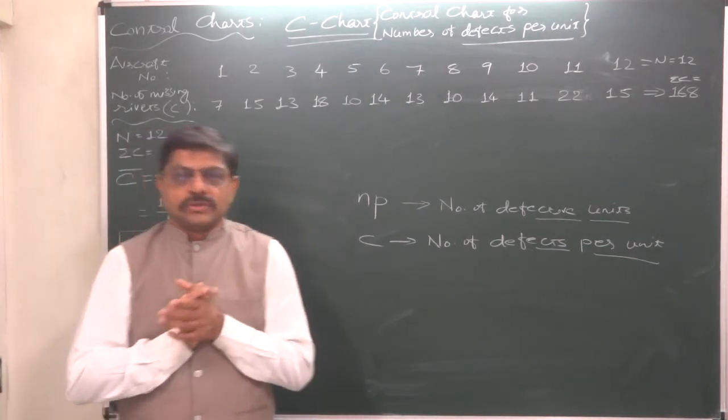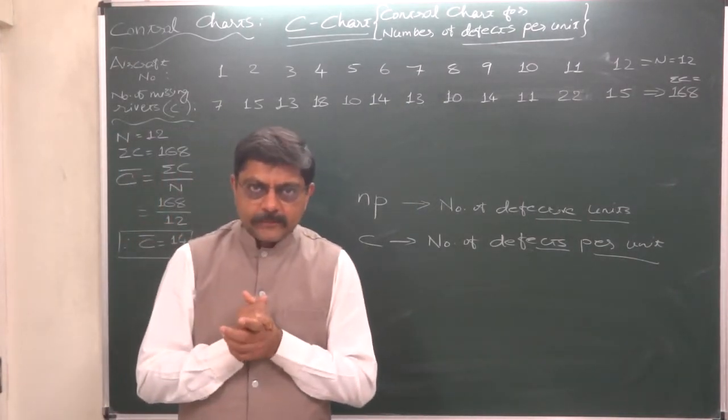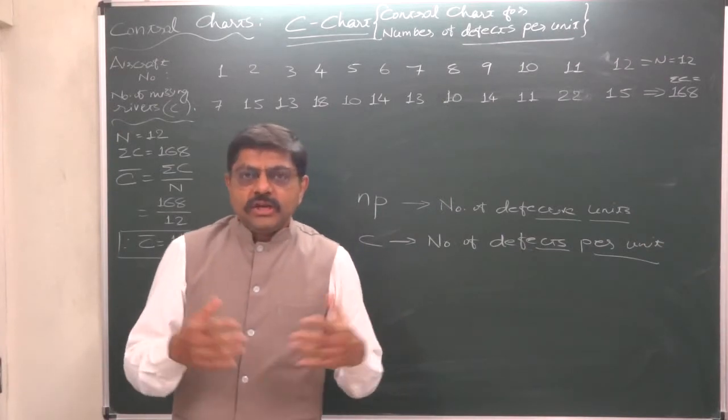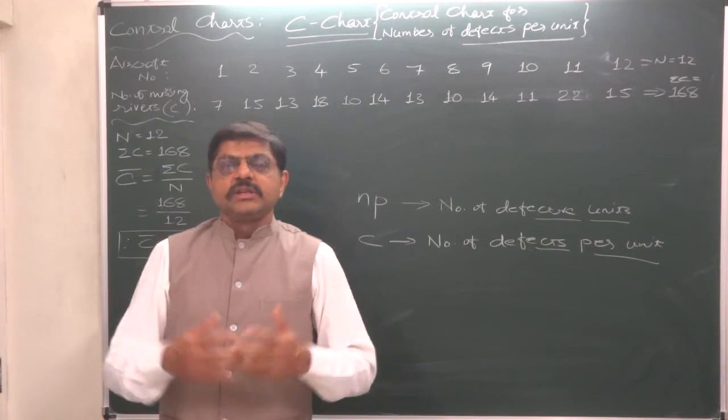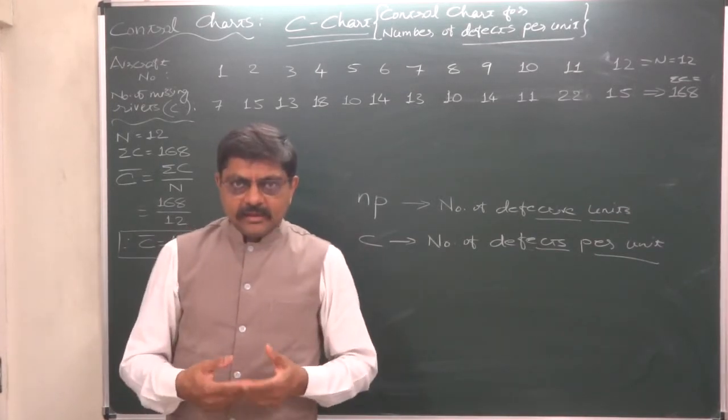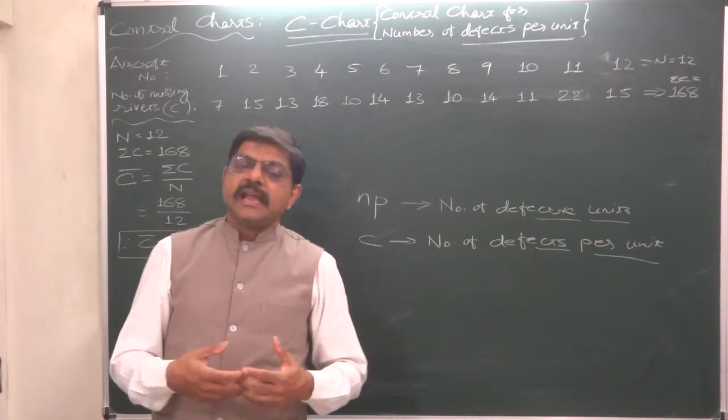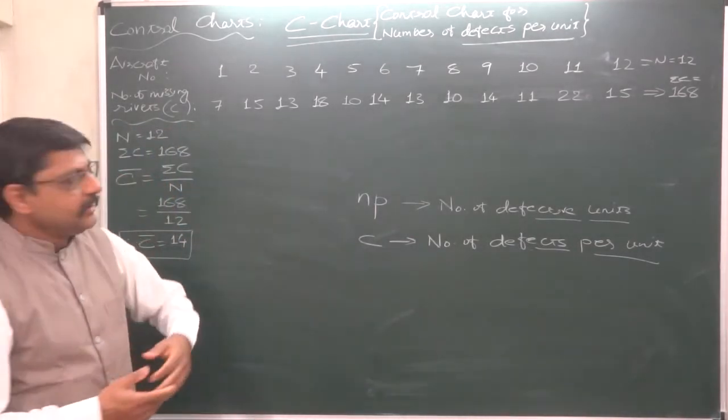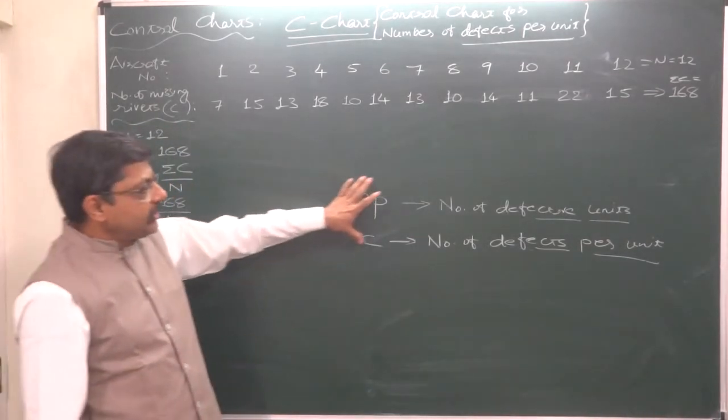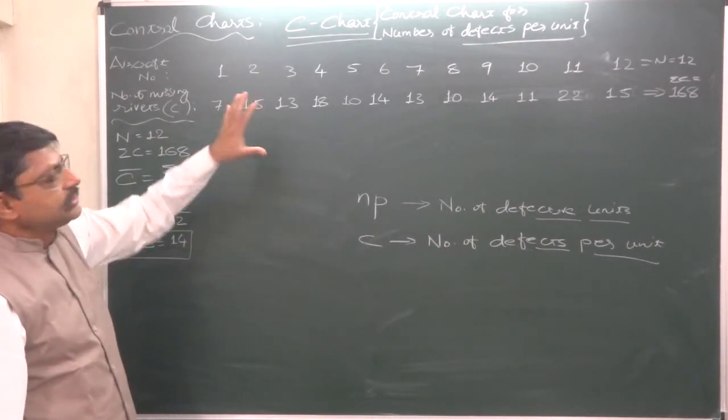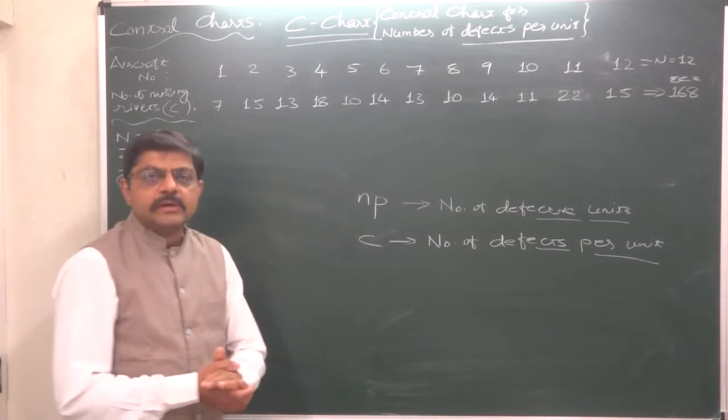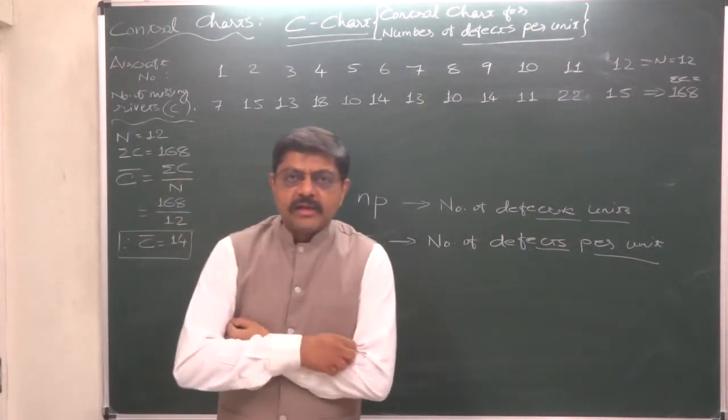Take another example: a sheet of lamination for furniture purpose, a sheet of metal, a sheet of mirror, etc. can be taken as product. In all these kinds of products, we have to go for statistical quality control through C chart.